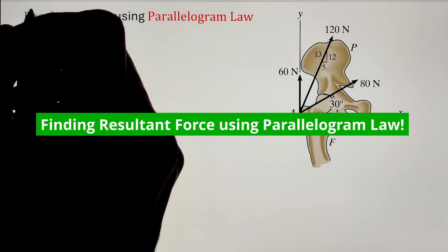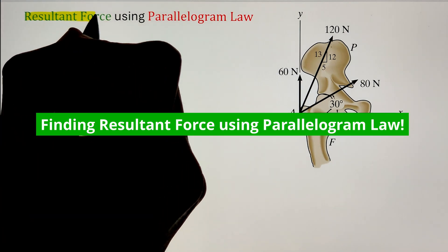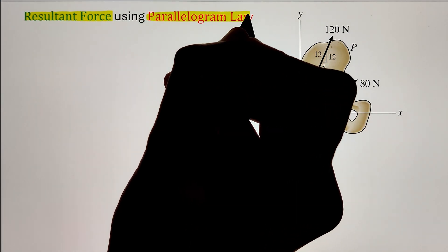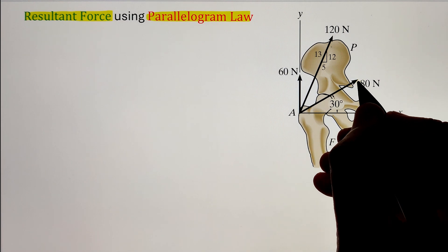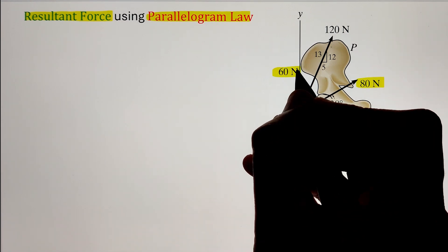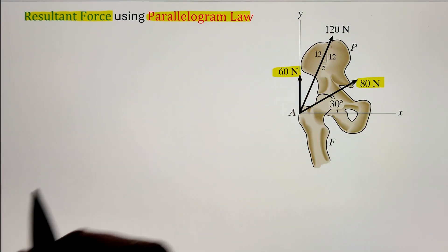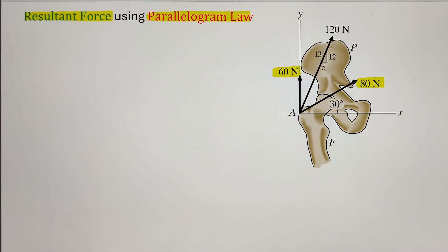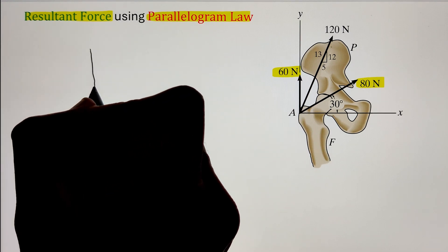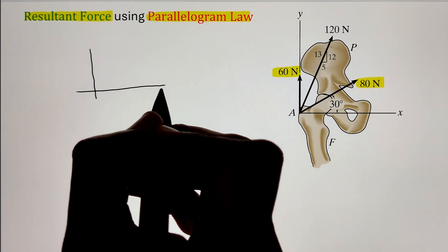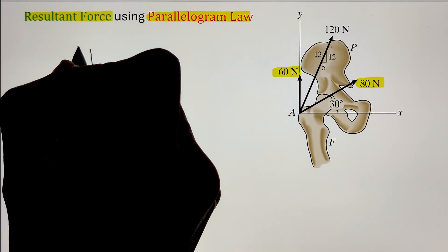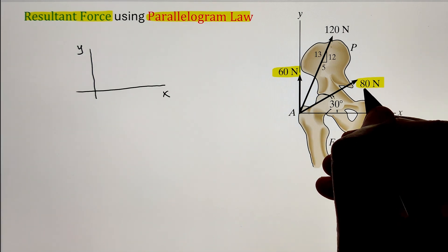In order to find the resultant force using the parallelogram law of the three muscular forces acting on the pelvic bone as shown in the figure, we can start by first figuring out the resultant of two of those forces and then utilizing the resultant force and the third force to calculate the resultant of all three forces.